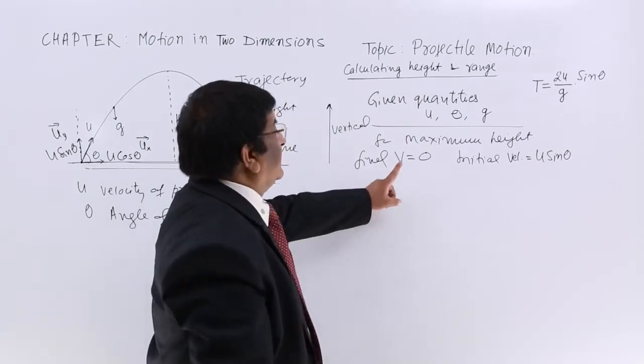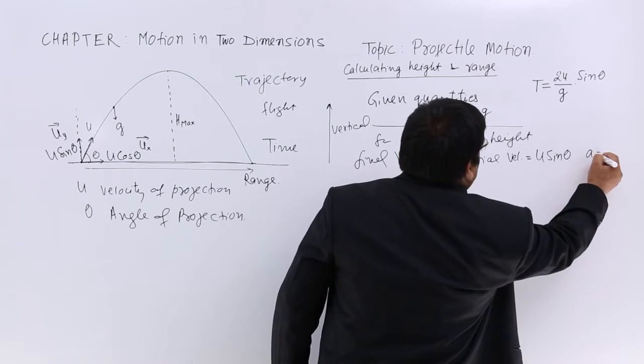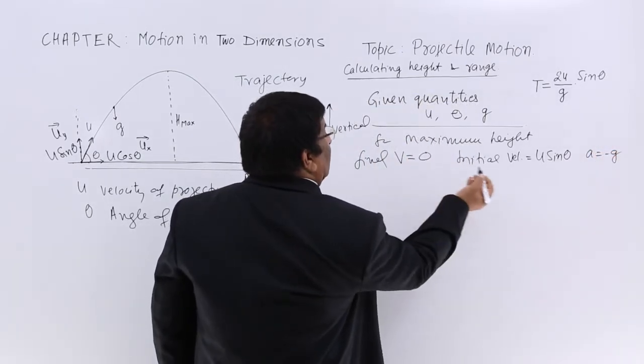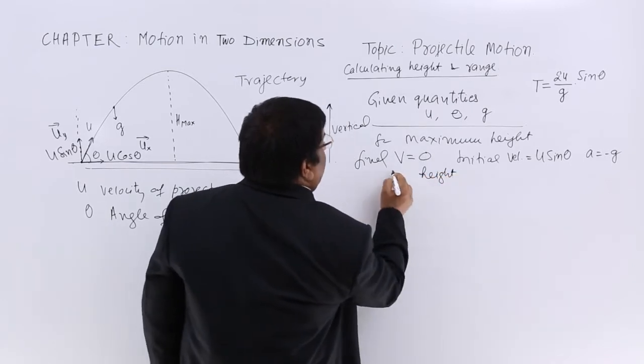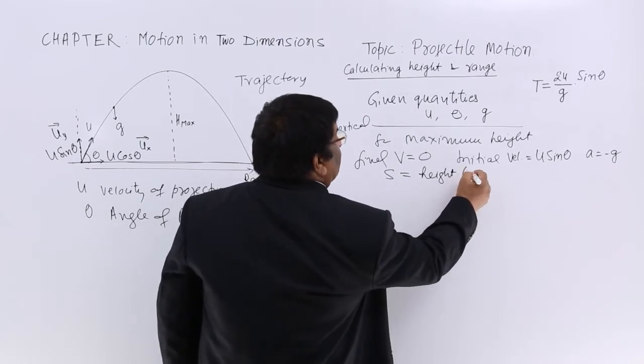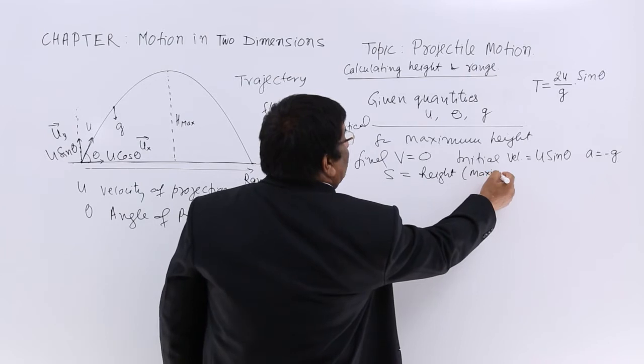Final velocity is 0, initial velocity is u sin θ, and we know acceleration is g. We're trying to find height, which is displacement. When velocity becomes 0, this height is the maximum height.